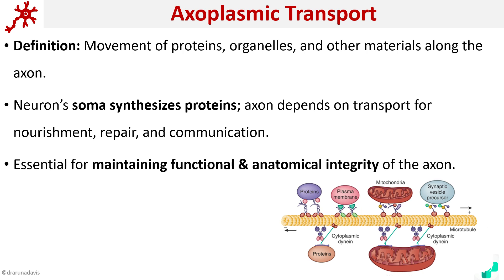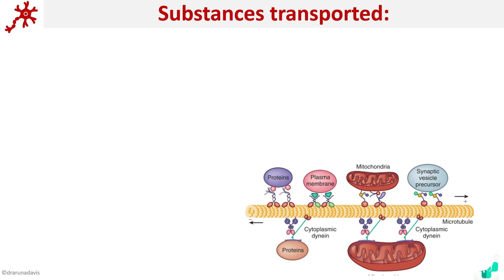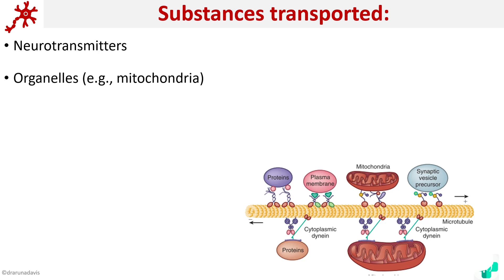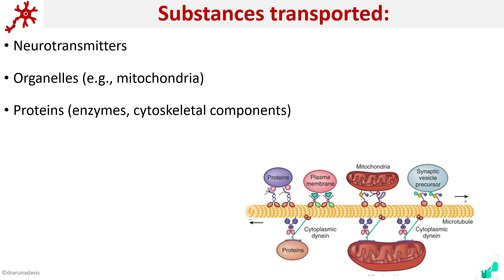What are the usual substances that are transported via this method? Neurotransmitters are transported, as well as organelles like mitochondria, proteins like enzymes, cytoskeletal components, vesicles, and growth factors — all transported by means of axoplasmic transport.